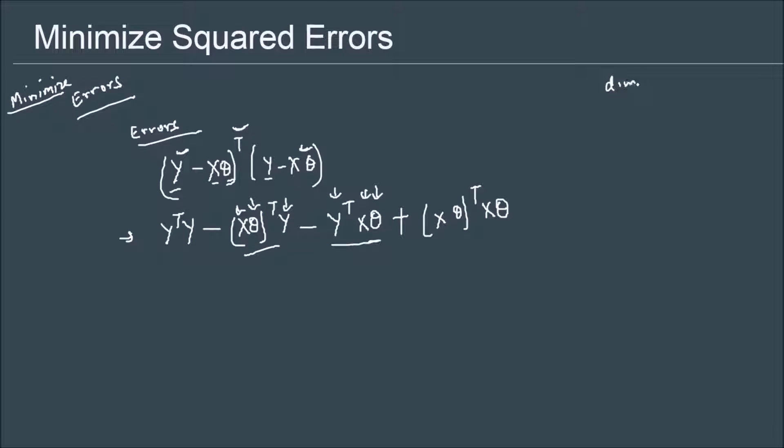So x will be an m by n matrix, where m is the number of rows and n is the number of columns. If I go back to house prices, so I have area and I have price: 2100, 100 thousand, 80...